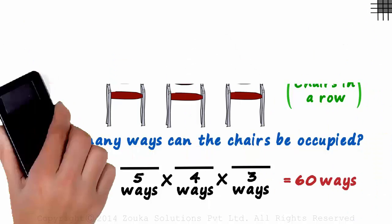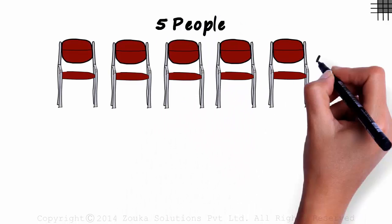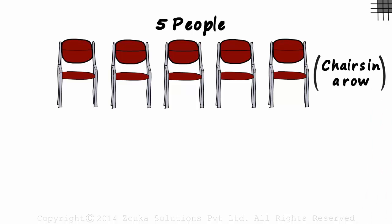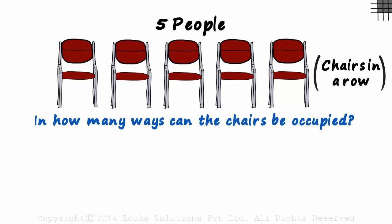Let me modify the question a bit. This time we have five people and we have been provided with five chairs. Again, the chairs are in a row. In how many ways can the chairs be occupied? What does this mean? In simple words, the question is asking us for all possible arrangements of five people on these five chairs.